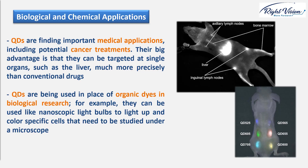Another example is biological and chemical applications. Quantum dots are also finding important medical applications, including potential cancer treatment. Quantum dots can be designed to accumulate in particular parts of the body and deliver anti-cancer drugs bound to them. Their big advantage is that they can be targeted at single organs, such as the liver, much more precisely than conventional drugs, reducing the unpleasant side effects characteristic of untargeted traditional chemotherapy.